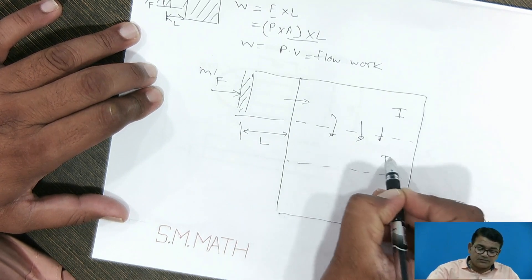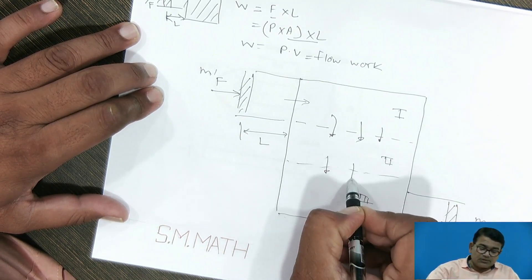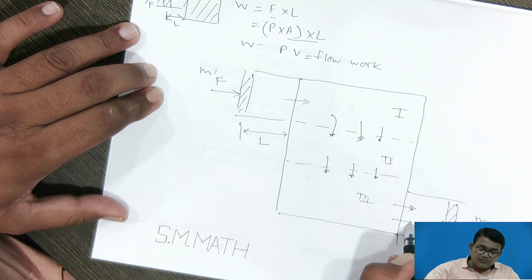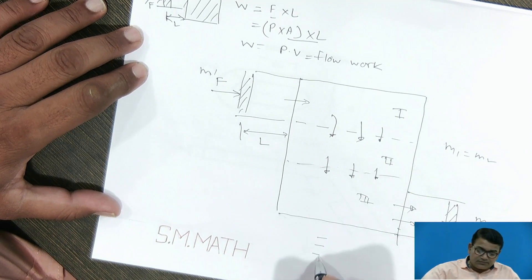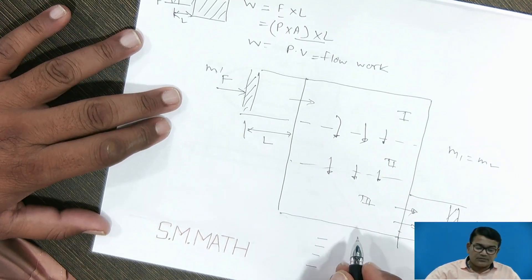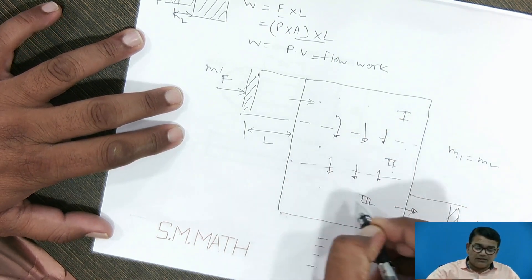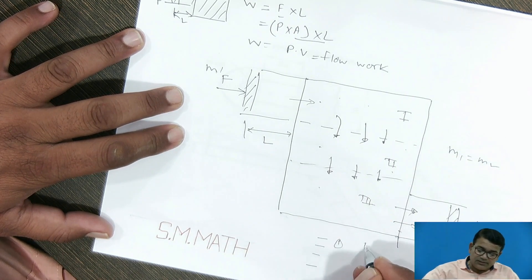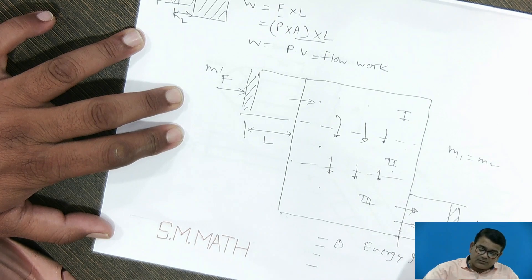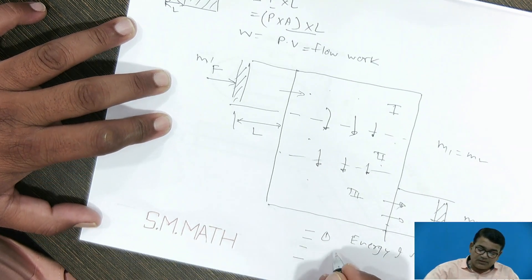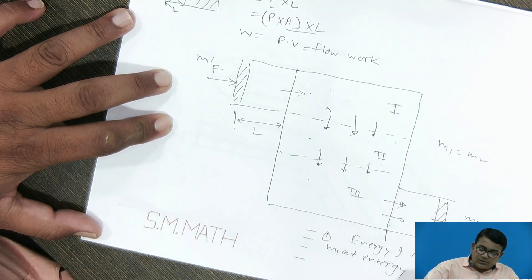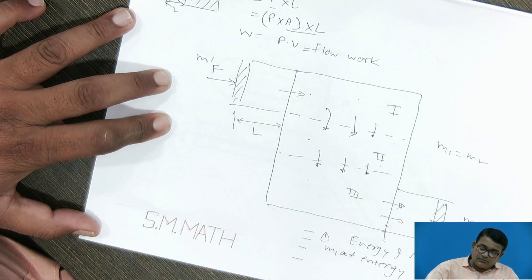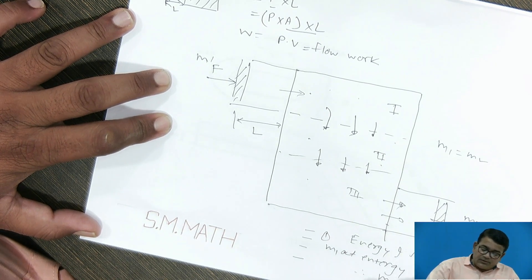Let us consider three layers: first layer, second layer, and third layer. Whatever the mass entering in that system and the mass leaving from that system is the same one, so M1 is equal to M2. When you go for all these concepts, we have to assume some data. At any point of this control flow, energy and state of the system is the same — there is no change. Secondly, mass M1 at entry is equal to mass M2 at exit, therefore M1 is equal to M2.